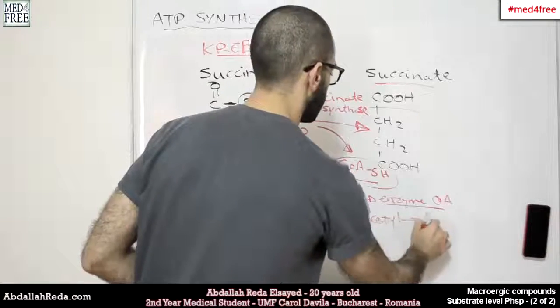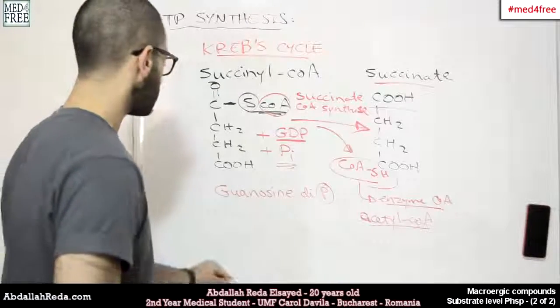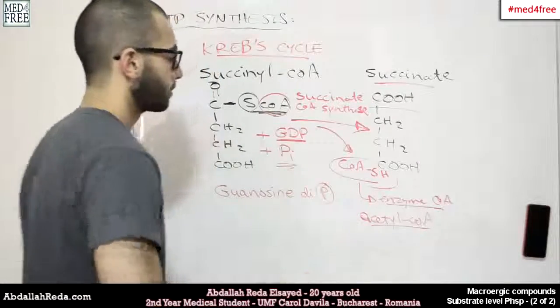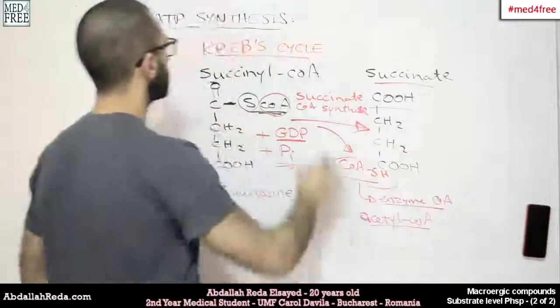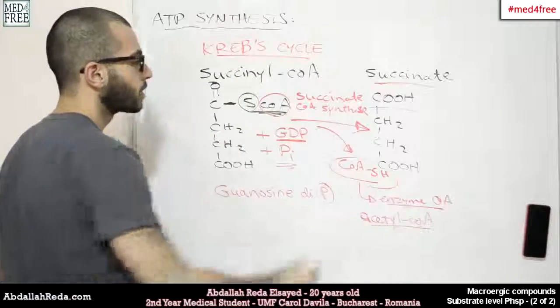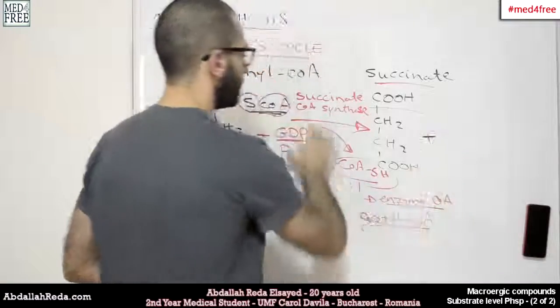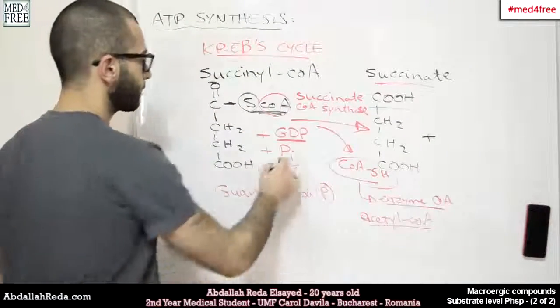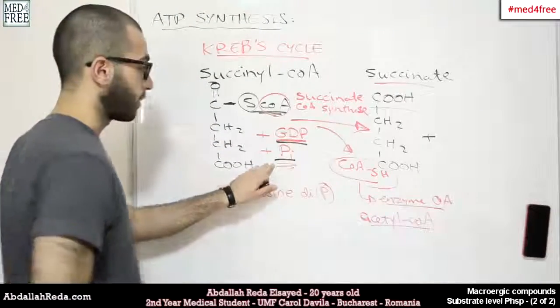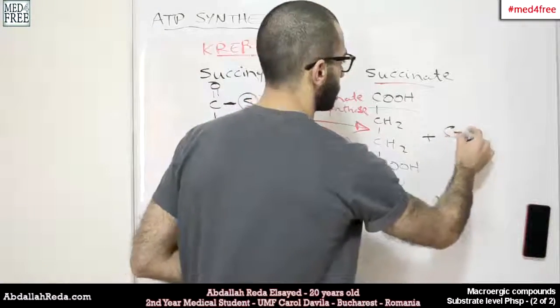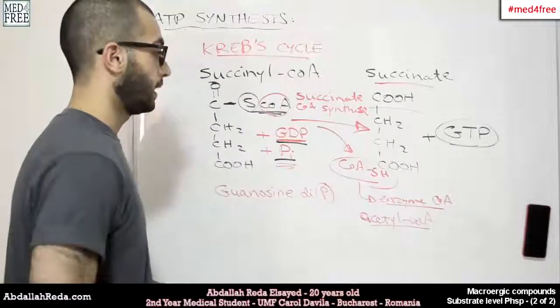Which is important for the citric acid cycle, Krebs cycle - this is why this reaction occurs there. We don't really need to know that for the moment. We're just concerned about the ATP synthesis. This compound is formed, and throughout this reaction, the GDP will be added to the phosphoric acid group that we have here in order to produce GTP.